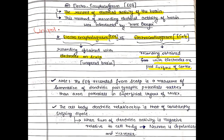EEG can be measured in two ways: bipolar method or unipolar method. In the unipolar method, we use just one active cortical electrode, and the other electrode is an indifferent electrode placed on any area far away from the cortex — for example, the ear lobe. So the indifferent electrode is at the ear lobe while the active cortical electrode is placed over the scalp.